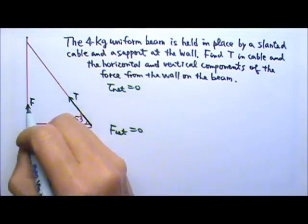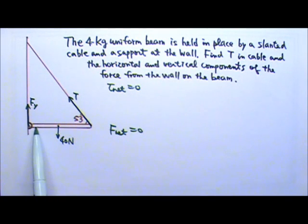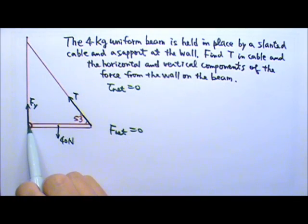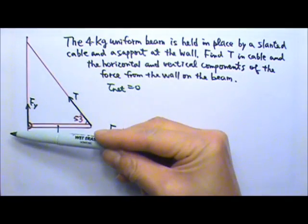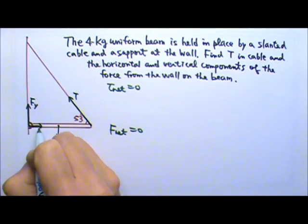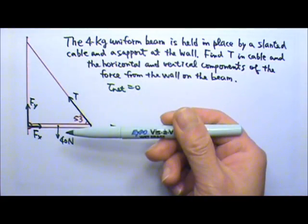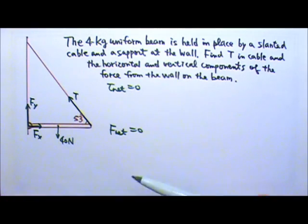That means the vertical component of the support force must go up. So this is the force's Y component. There is also a horizontal component. If we remove this support, with Mg and tension still there, this end of the beam must have a tendency to poke into the wall. So the force from the wall in the horizontal direction must go to the right. Another way to tell this direction is: since tension has a component going to the left, this horizontal component must go to the right so these two can cancel, because our net force on the beam has to be zero.